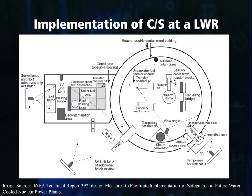There are two containment and surveillance measures that are missing from this facility. As you can see, there is an overhead crane that is used to remove fuel from the reactor core and then to move the fuel around the reactor facility. At some facilities, the IAEA may place a seal on one of the access mechanisms to this crane. By placing a seal on the crane, the IAEA will know if the crane was used to move fuel around the facility. If the seal is broken when the IAEA inspector comes to the facility, this signals the inspector to review the video surveillance data to determine what activities occurred after the seal was broken.